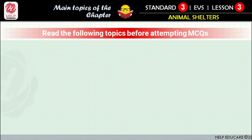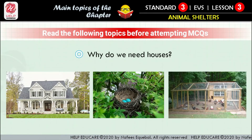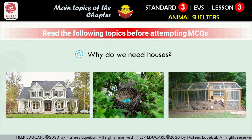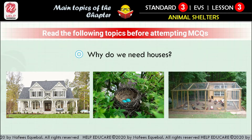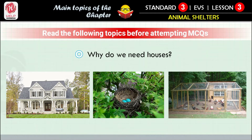We hope that you have learned this chapter with full attention. Now let us summarize it. The first thing that comes to our mind is: why do we need houses? Very cold weather, gusty winds, scorching sun, and heavy rains can cause us great discomfort. We live in houses to protect ourselves from them. A house also protects us from thefts.